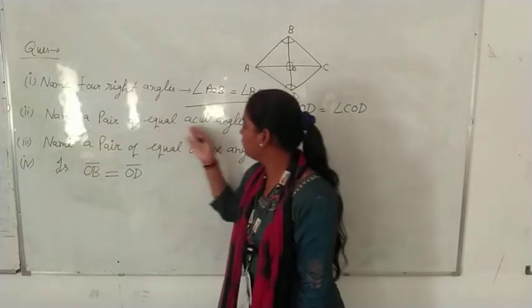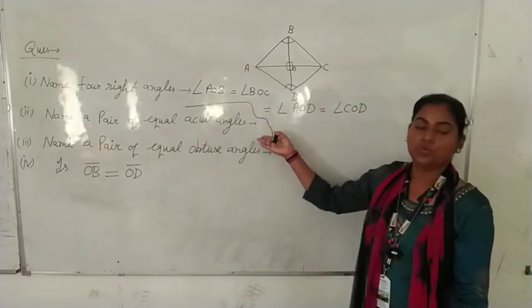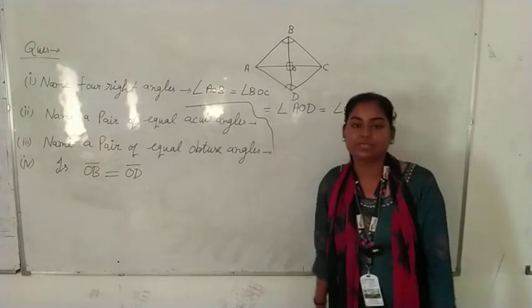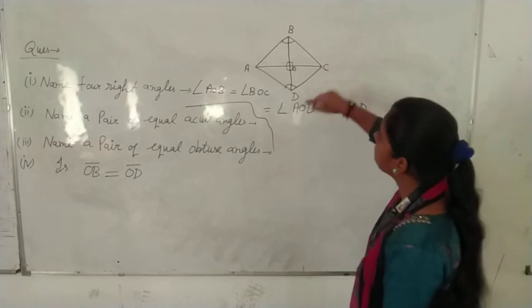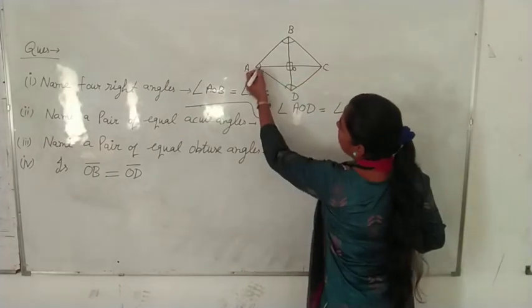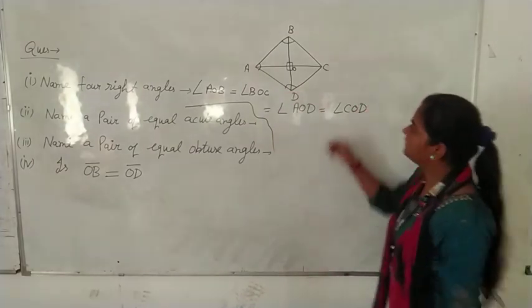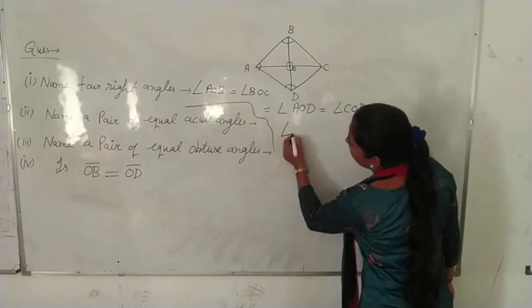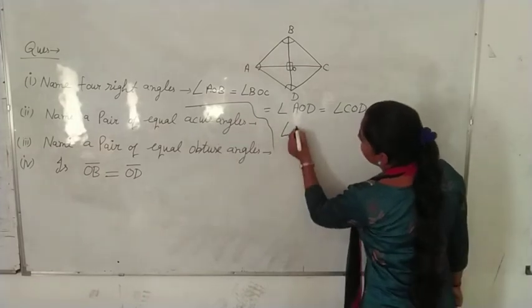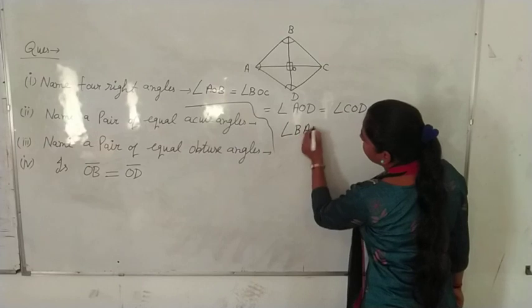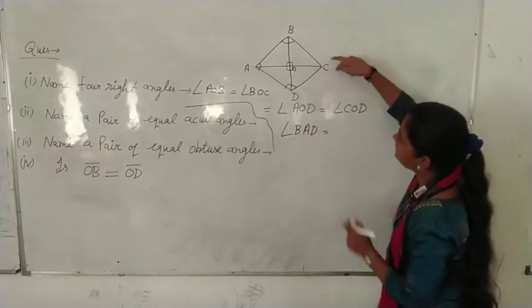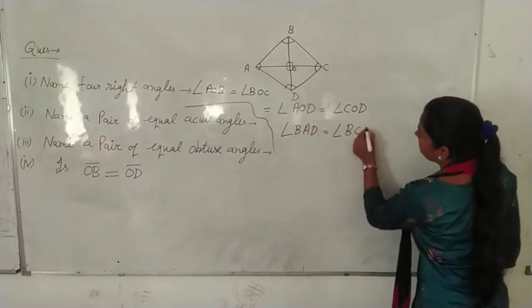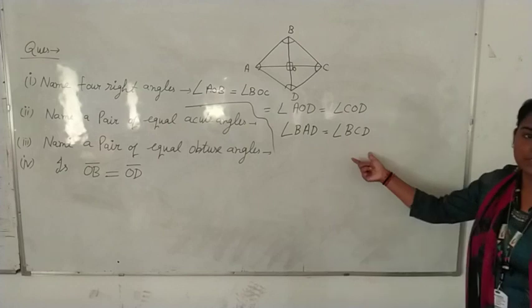Second question: name a pair of equal acute angles. What is an acute angle? Which is greater than 0 and less than 90. It is an acute angle. One pair we have here: angle BAD and second, angle BCD. One pair of equal acute angles: angle BAD and angle BCD.